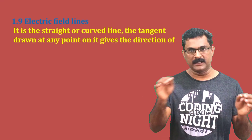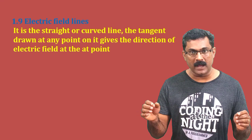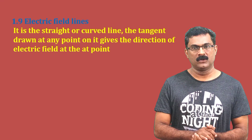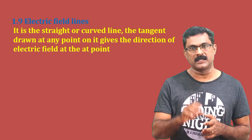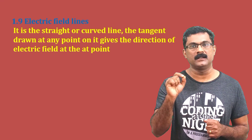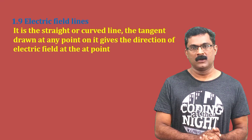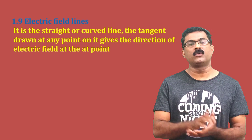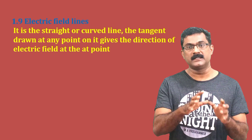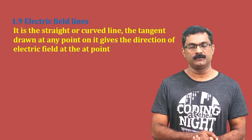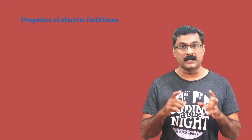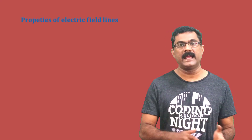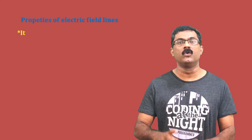Electric field lines can be straight or curved. At any point on the line, we use a tangent to indicate the direction of the electric field. The direction of electric field lines always starts from a positive charge and ends at a negative charge, or goes to infinity.